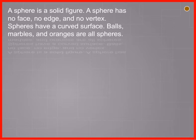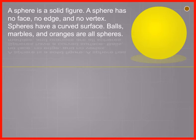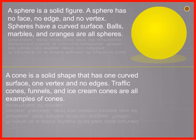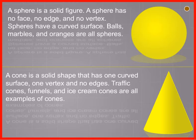A sphere is a solid figure. A sphere has no face, no edge and no vertex. Spheres have a curved surface. Balls, marbles and oranges are all spheres.